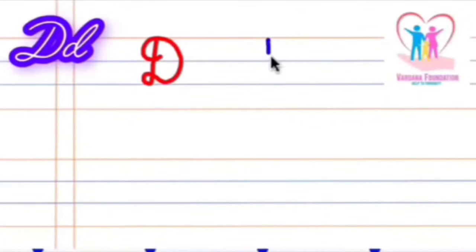Let's write it again. Standing line from top, make a loop, a curve, touch the pink line, smile on the first blue line, uppercase cursive letter D. Let's write lowercase cursive letter D.